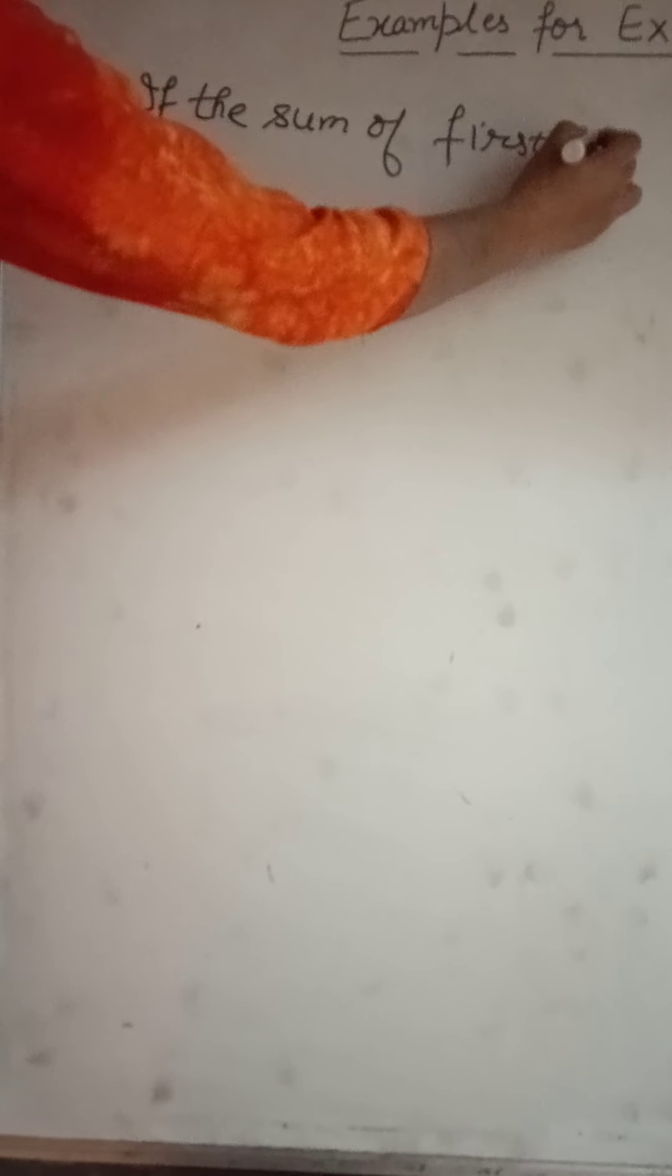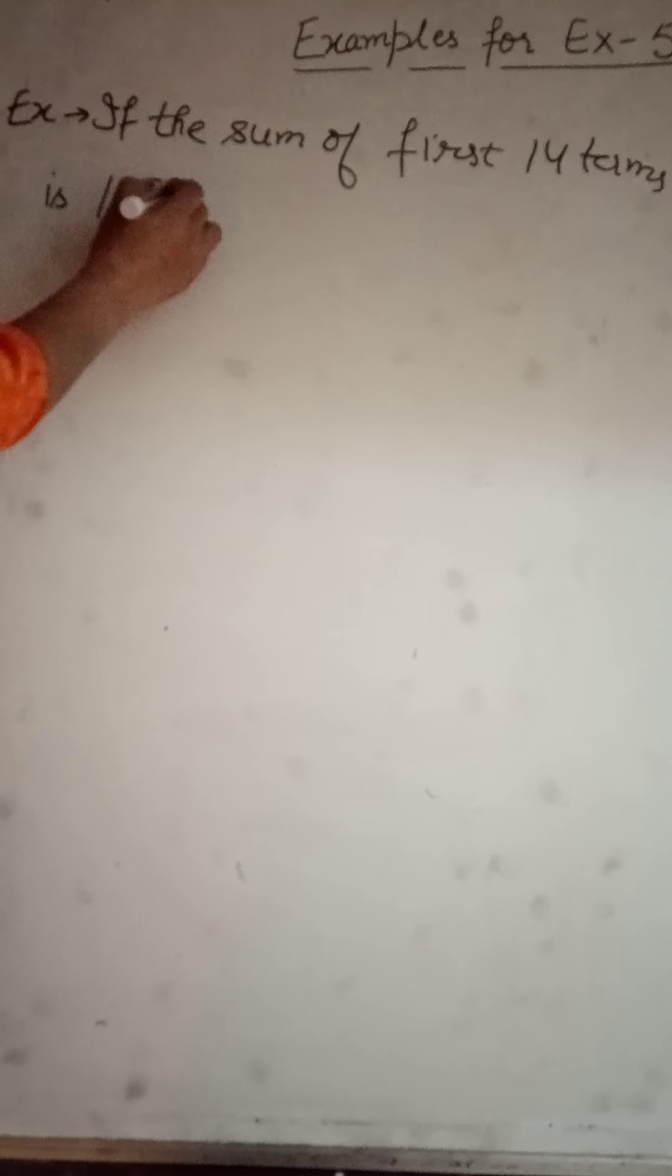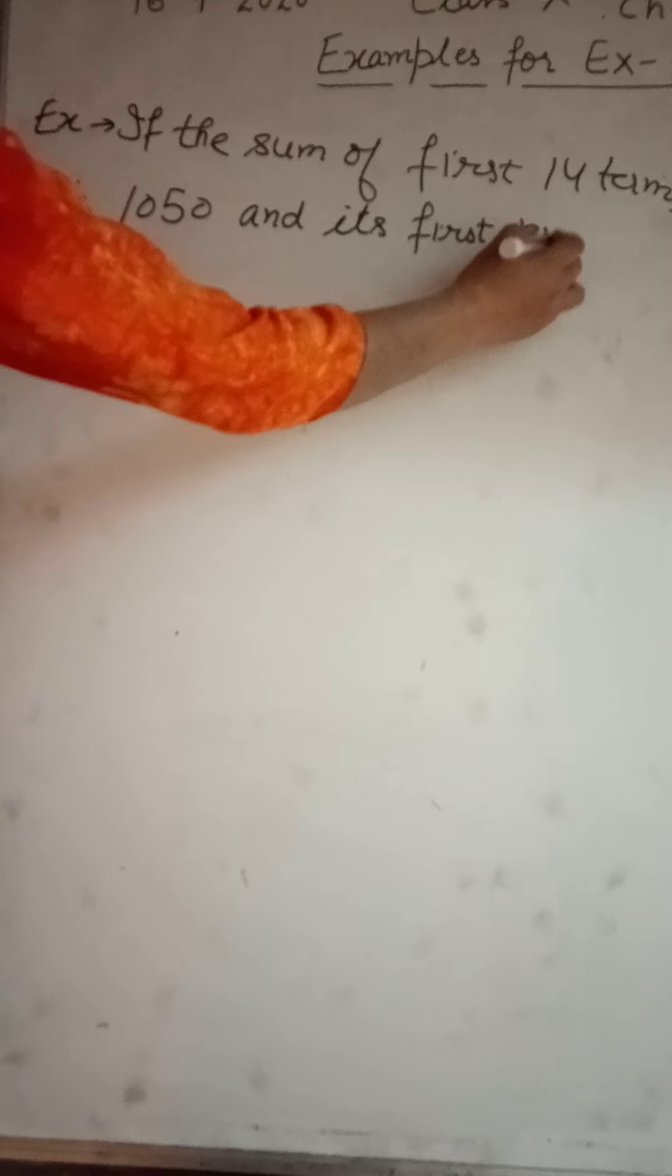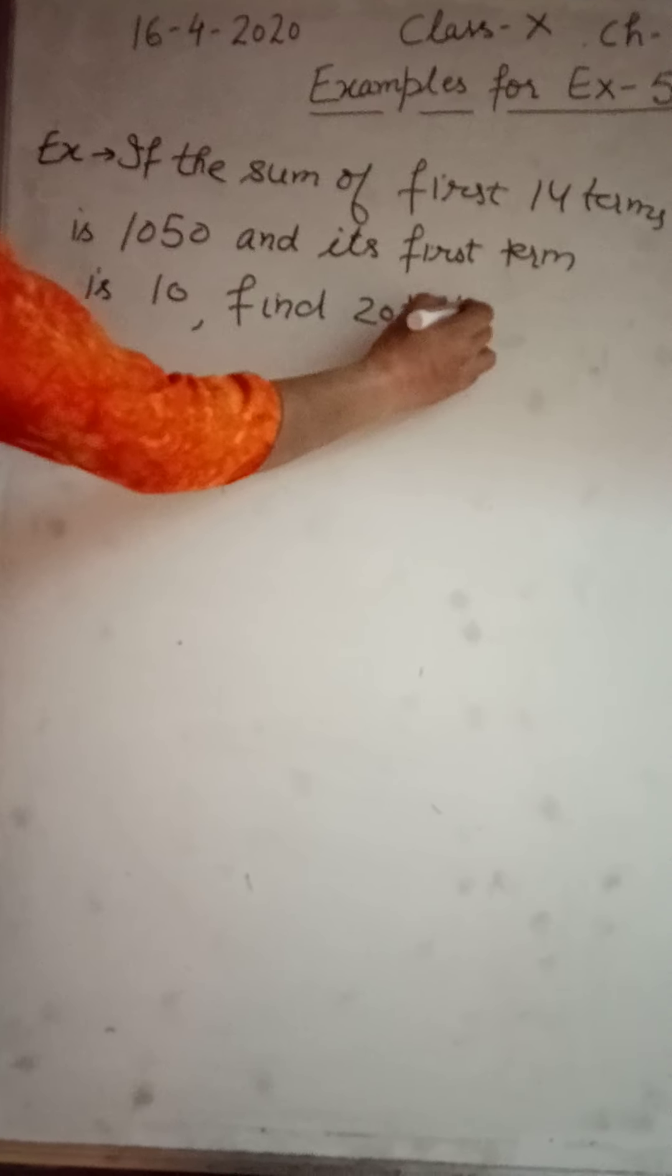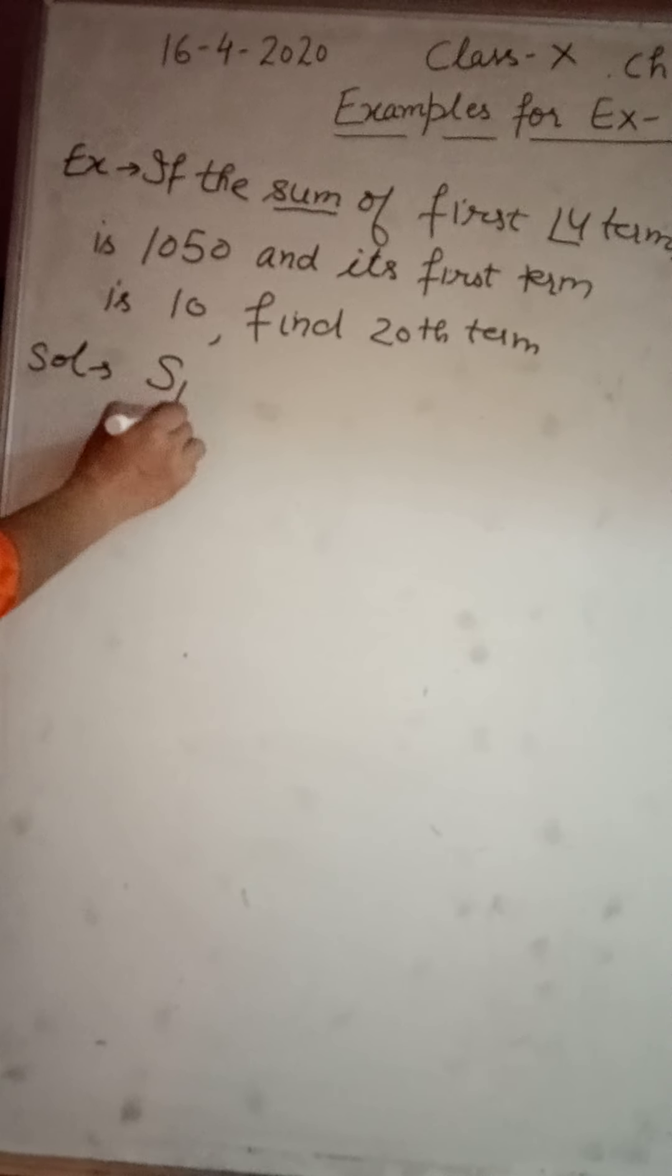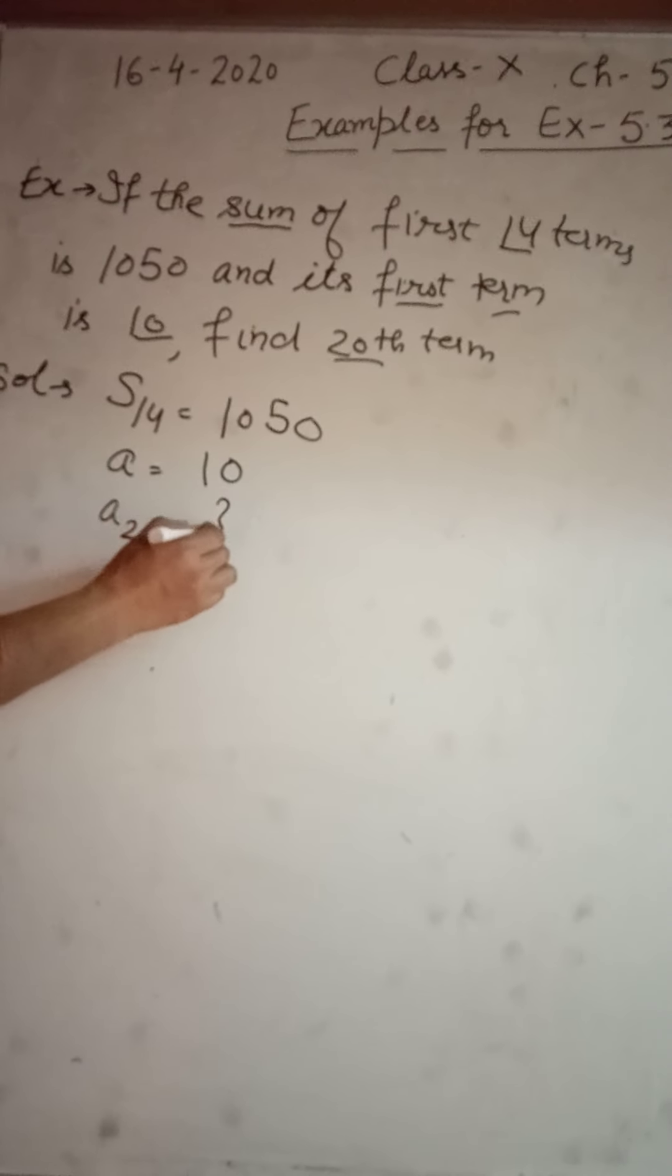In next example, they are saying, if the sum of first 14 terms of an AP is 1050 and its first term is 10, find twentieth term. So now, what is given to us? Sum of first 14 terms means S14 is given to us. Then first term means a is given to us. And what we have to find? We have to find a_20.